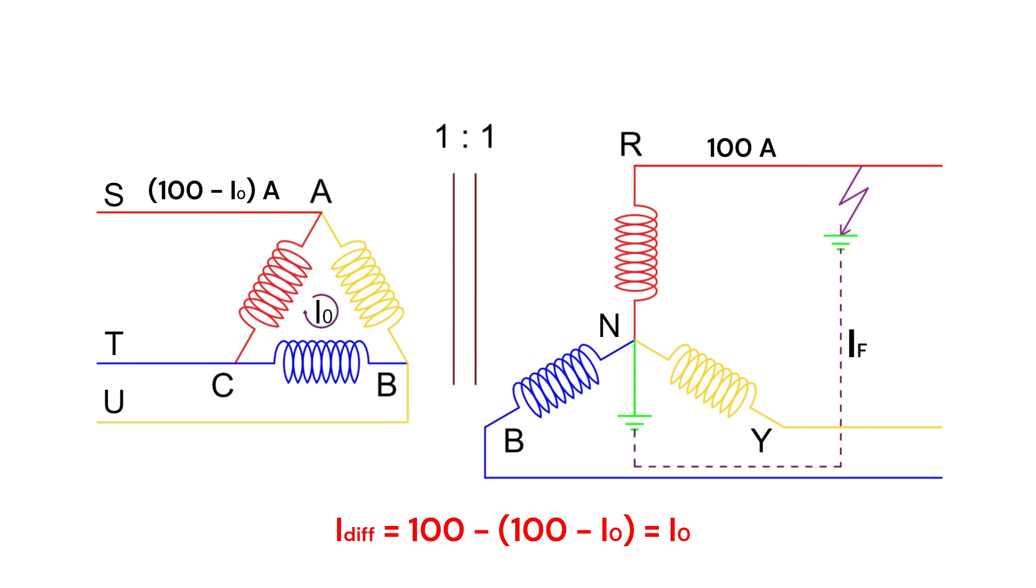This is why zero-sequence filtering is necessary in the differential protection of delta-star and star-delta transformers, to keep the differential relay stable during through-fault conditions. In star-star transformers, zero-sequence filtering may or may not be required, but it is recommended to enable it.